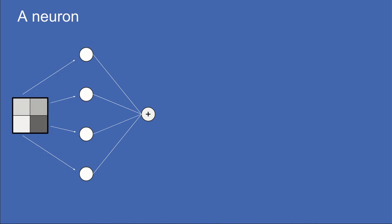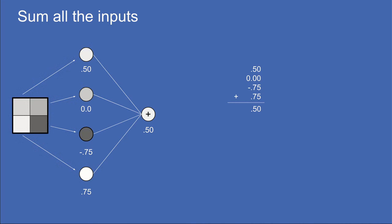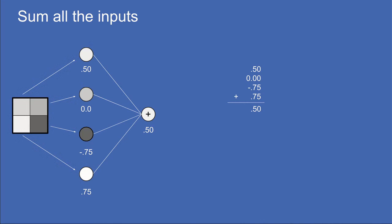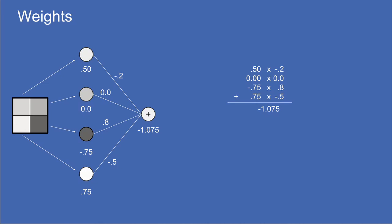To build a neuron, the first thing you do is take all inputs and add them up — giving a neuron value of, say, 0.5. Next, we add weights: each input gets assigned a weight between plus and minus one, and the value gets multiplied by that weight before being added. So now we have a weighted sum of these input neurons. We represent positive weights as white lines, negative weights as black lines, with line thickness proportional to the weight, and zero weights omitted to minimize visual clutter.